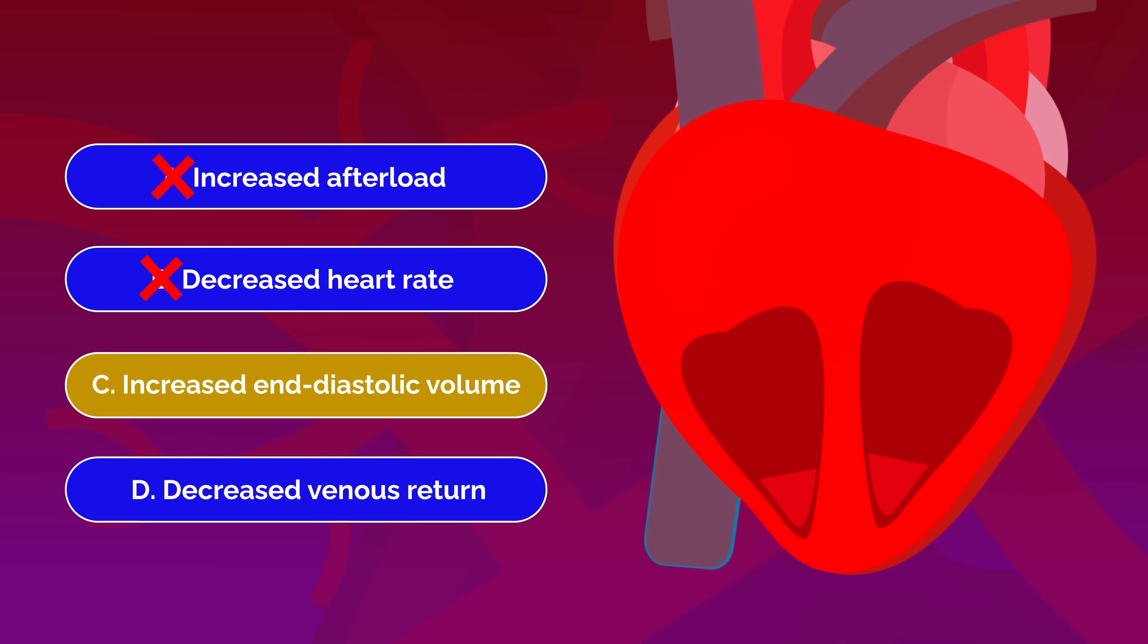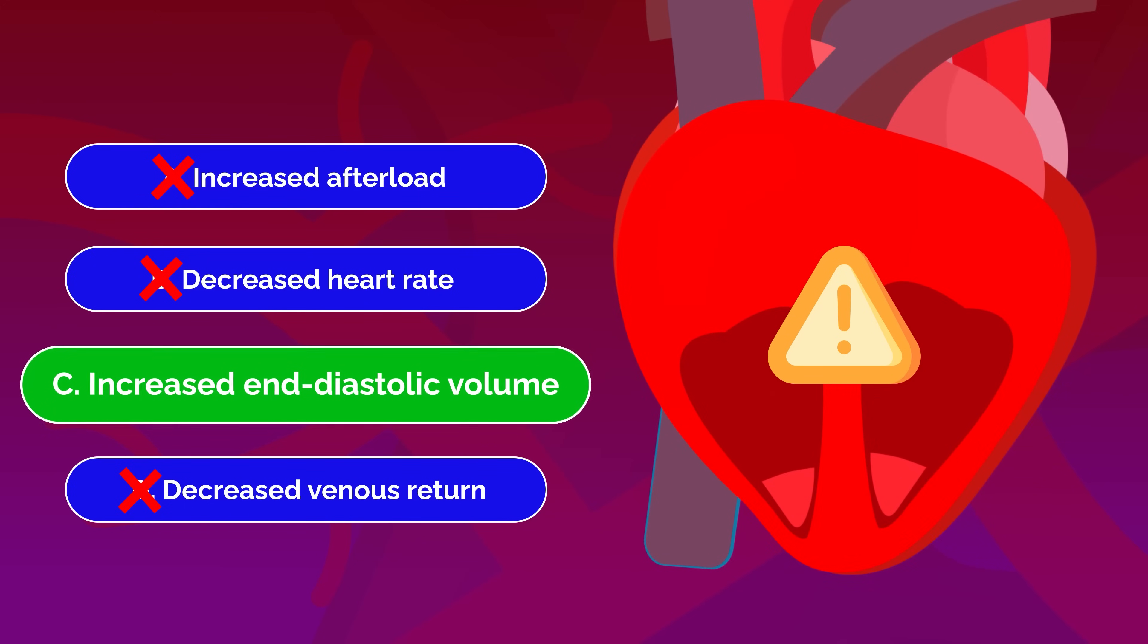This makes this option a strong contender. And finally, with option D, decreased venous return results in less preload, which means less stroke volume, which would worsen the cardiac output. Therefore, we can eliminate this option. Answer C is our best choice.